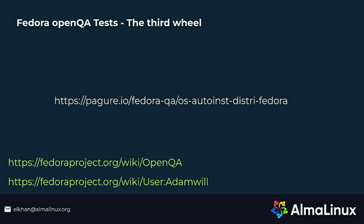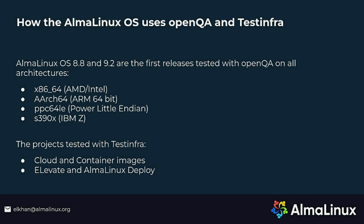I would like to thank Adam Williamson, the team lead of Fedora QA, and I also used his YouTube video about OpenQA when I was trying to grasp the idea of it, because it is a very sophisticated tool. AlmaLinux 8.8 and 9.2 are the first releases where we tested on all architectures. We also use TestInfra for testing our cloud and container images, and the Elevate and AlmaLinux Deploy projects — Elevate for migration between major versions and AlmaLinux Deploy for conversion between enterprise Linux distributions.